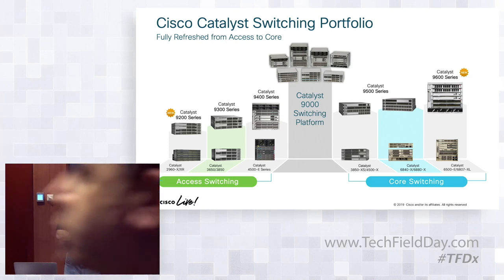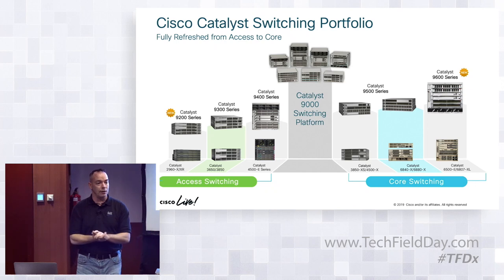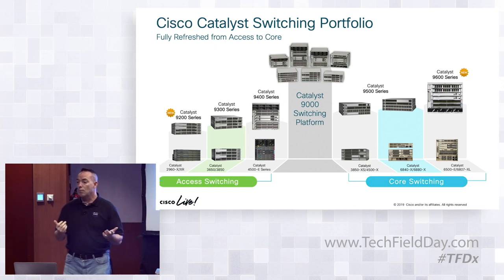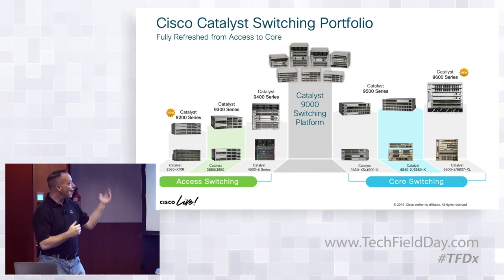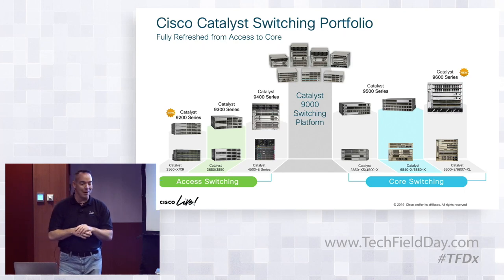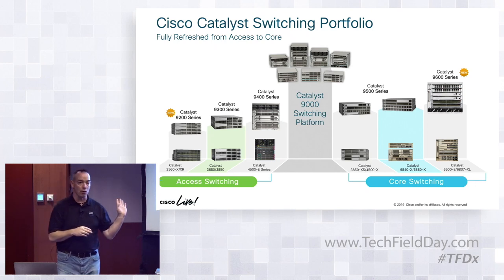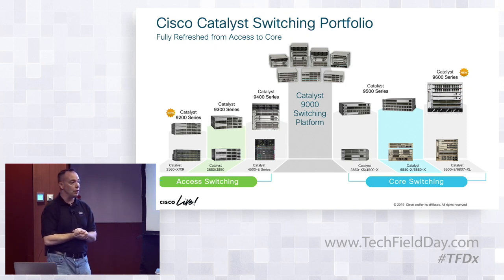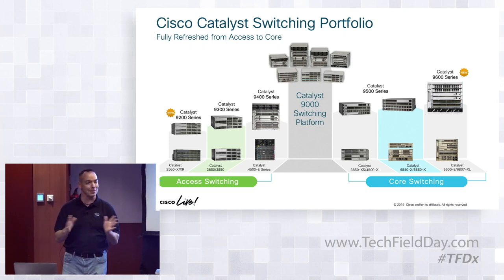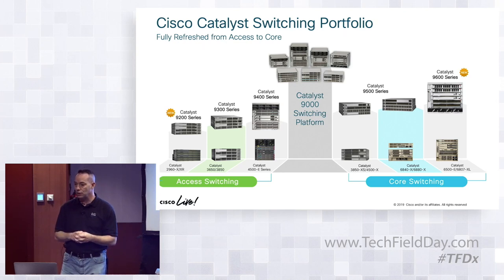You've heard of Catalyst 9000 — we've been talking about it for some time. The new introductions include the Catalyst 9600, the new modular chassis. The numbers were chosen for their predecessors. We also have the new Catalyst 9200, the successor to the 2960 or Cat 2K. So 9200, 93, 94, 95, 96 — it's one big family based on a common ASIC architecture and common software architecture.